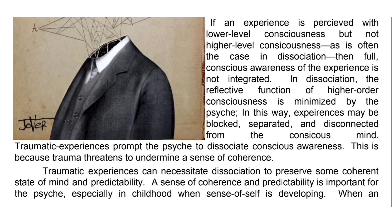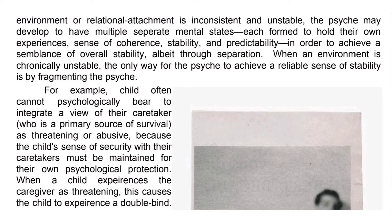A sense of coherence and predictability is especially important in childhood when the sense of self is developing. When an environment or relational attachment is inconsistent and unstable, the psyche may develop multiple separate mental states, each formed to hold their own experiences, sense of coherence, stability, and predictability. When an environment is chronically unstable, the only way for the psyche to achieve a reliable sense of stability may be by fragmenting.